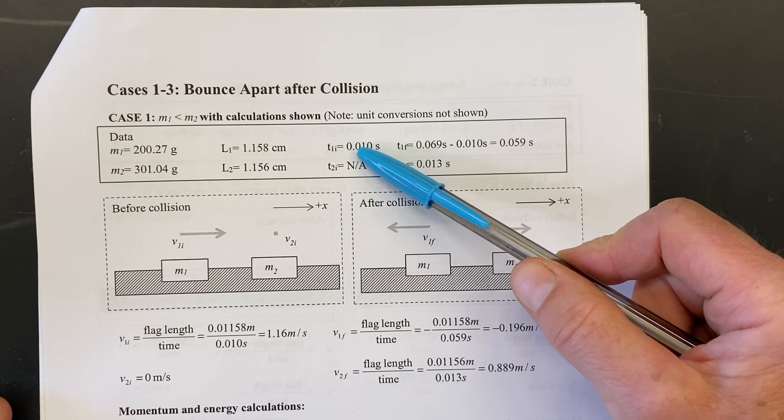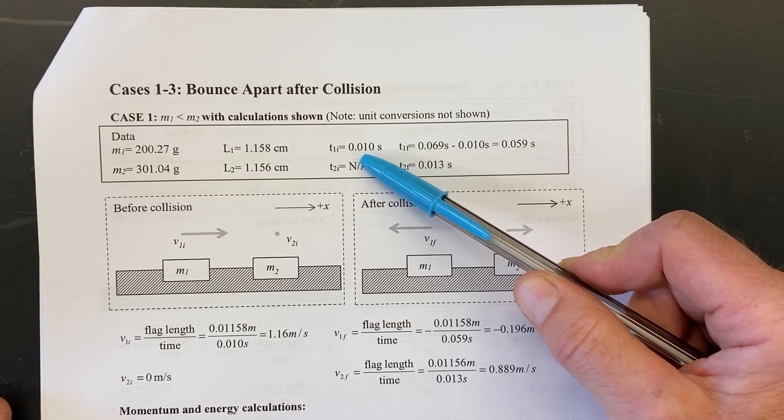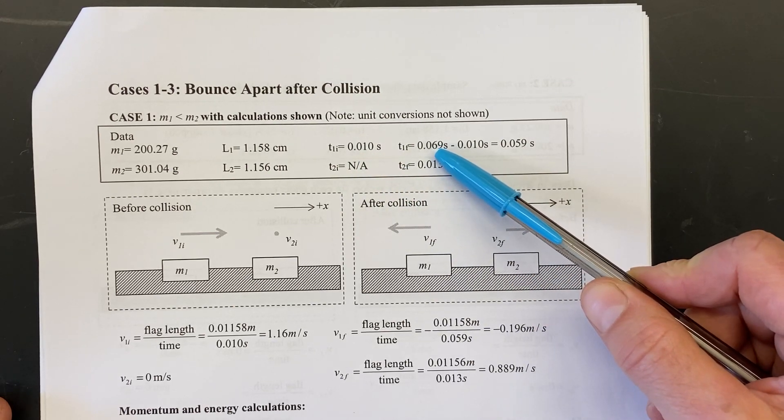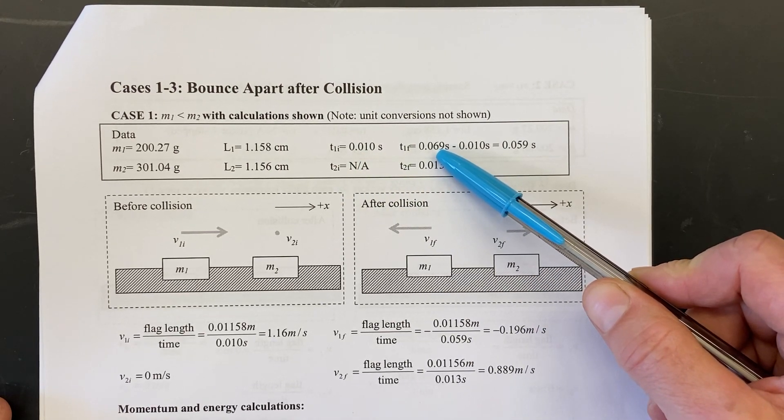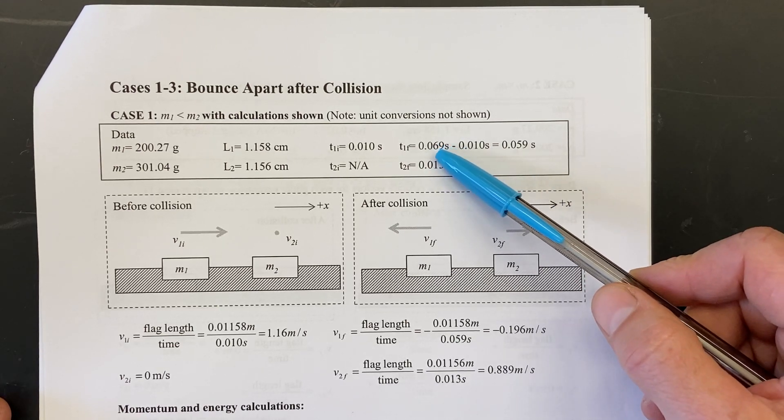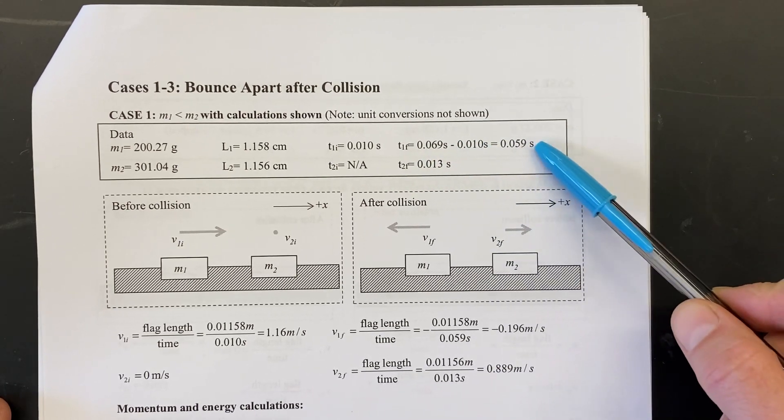This is the time it took for glider one to go left to right through that gate. This is the total time for glider one to go left to right and right to left through the gate.